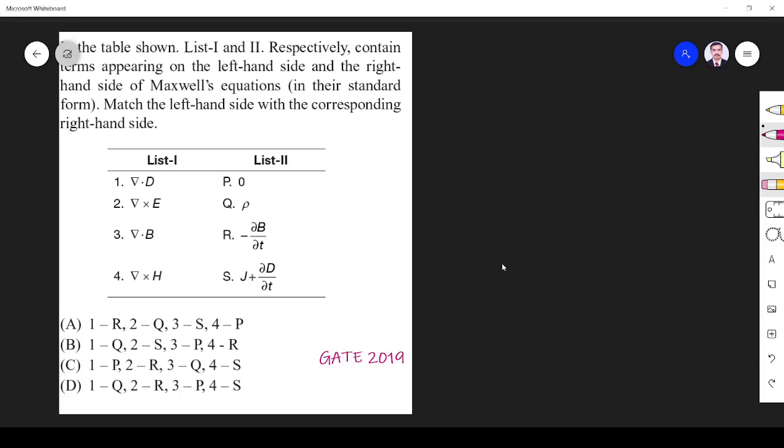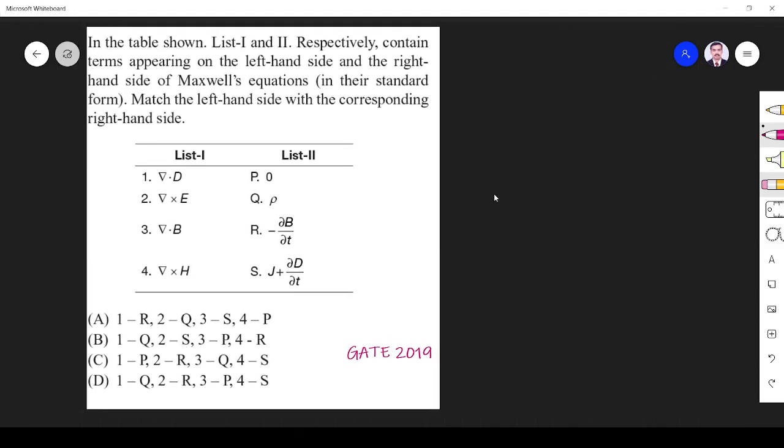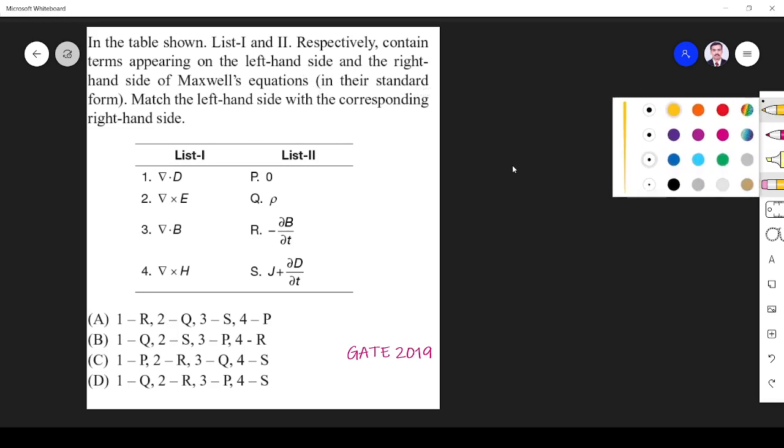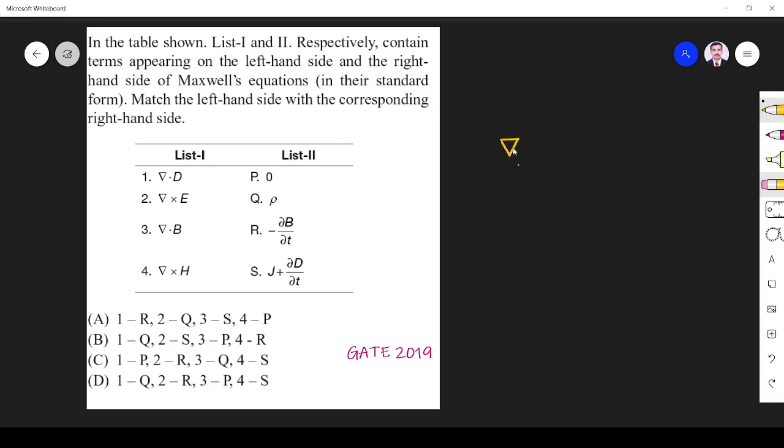Hi friends, in this video let us solve an electromagnetic related question asked in GATE 2019 C paper. The question is: in the table shown, List 1 and List 2 respectively contain terms appearing on the left-hand side and right-hand side of Maxwell's equations in their standard form. Match the following.